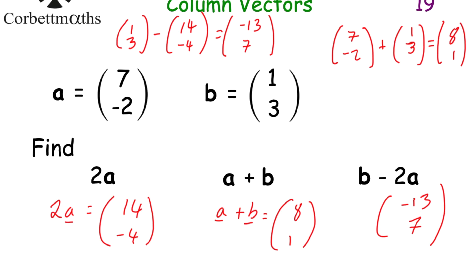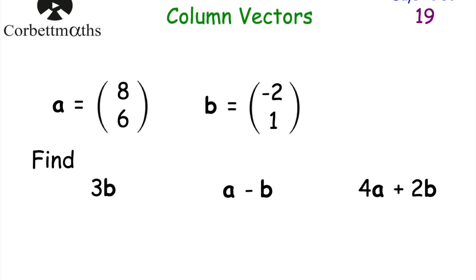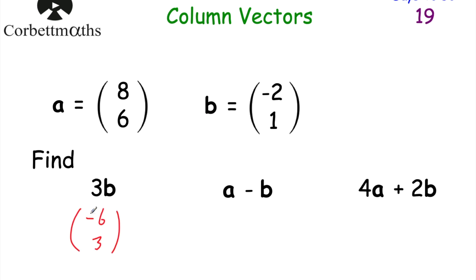Now let's try some for yourself. We have vectors a equals (8, 6) and b equals (-2, 1). Can you work out 3b, a subtract b, and 4a plus 2b? For 3b, we just multiply both numbers by 3, so 3b is (-6, 3). Well done if you got that.